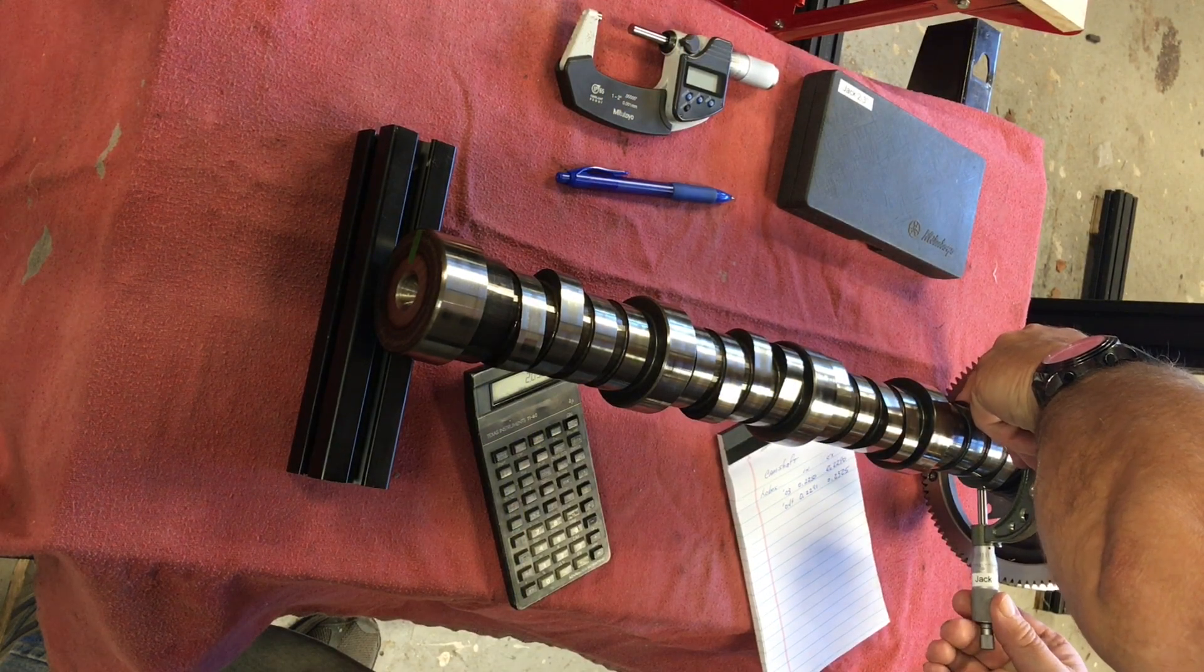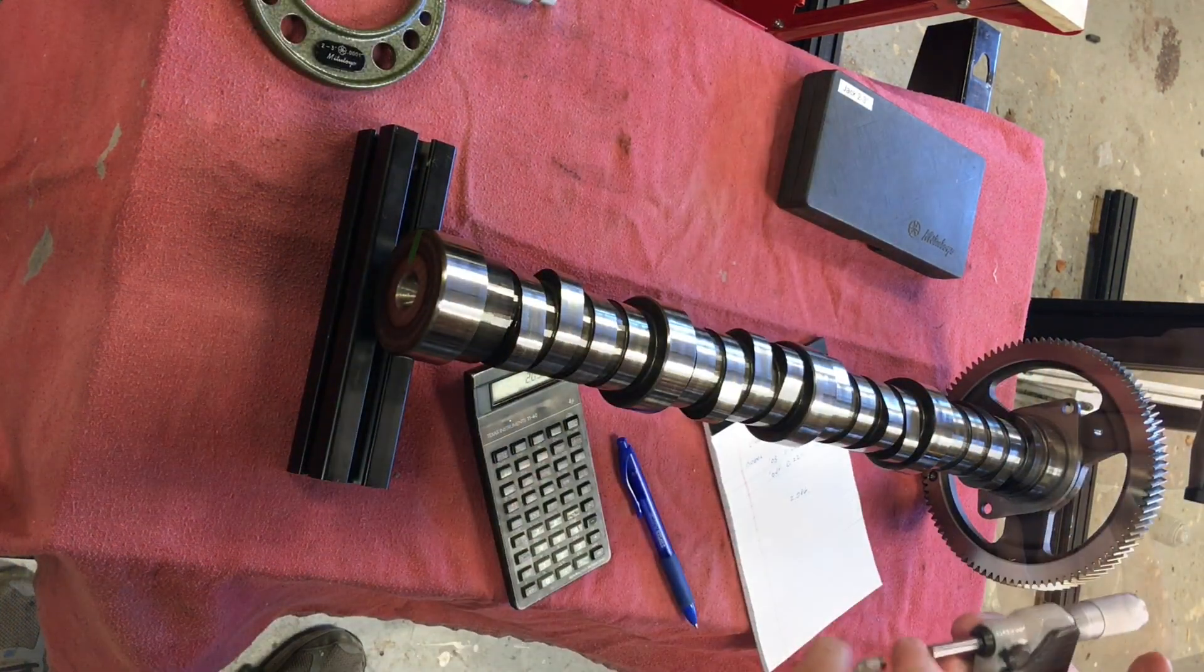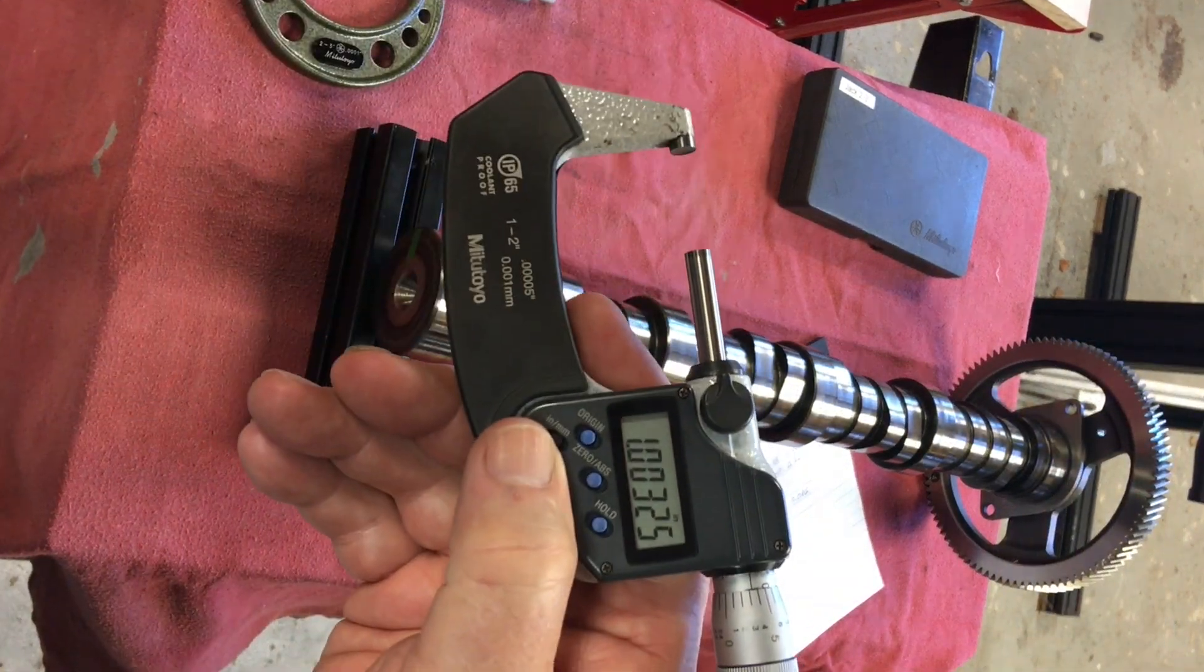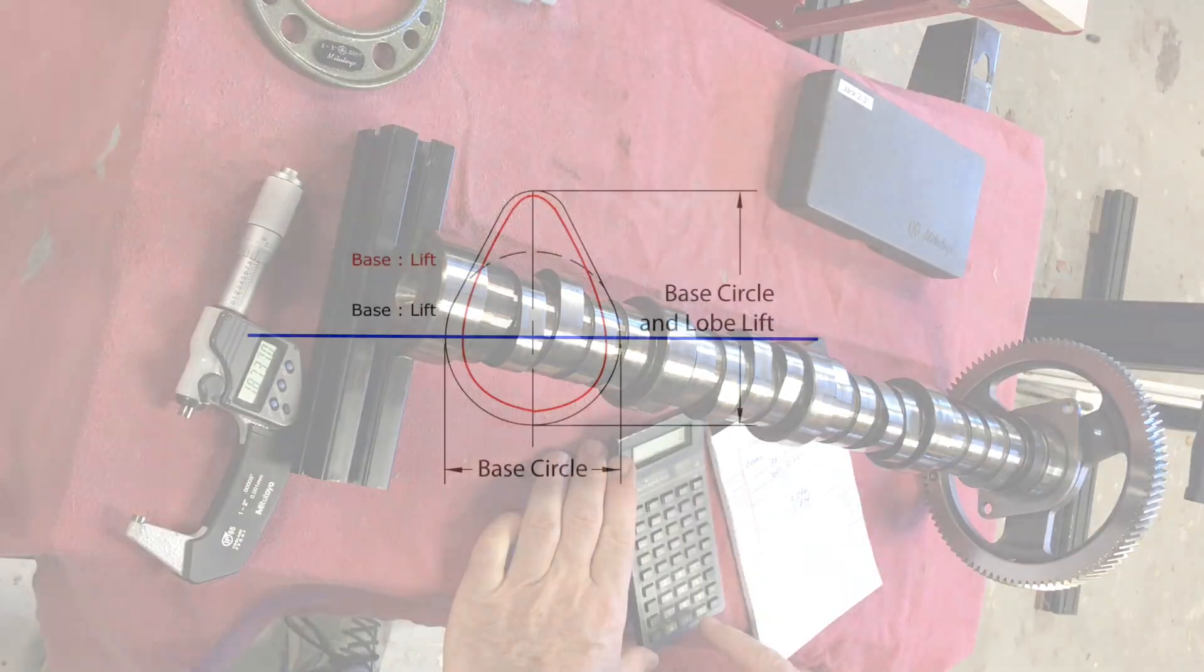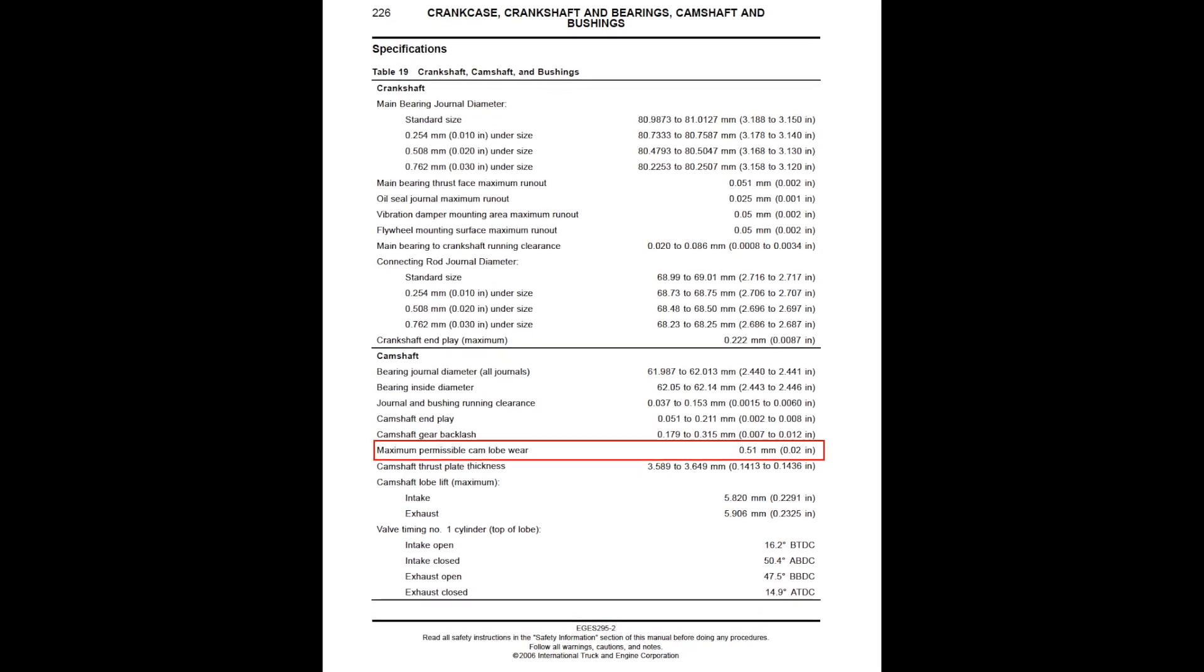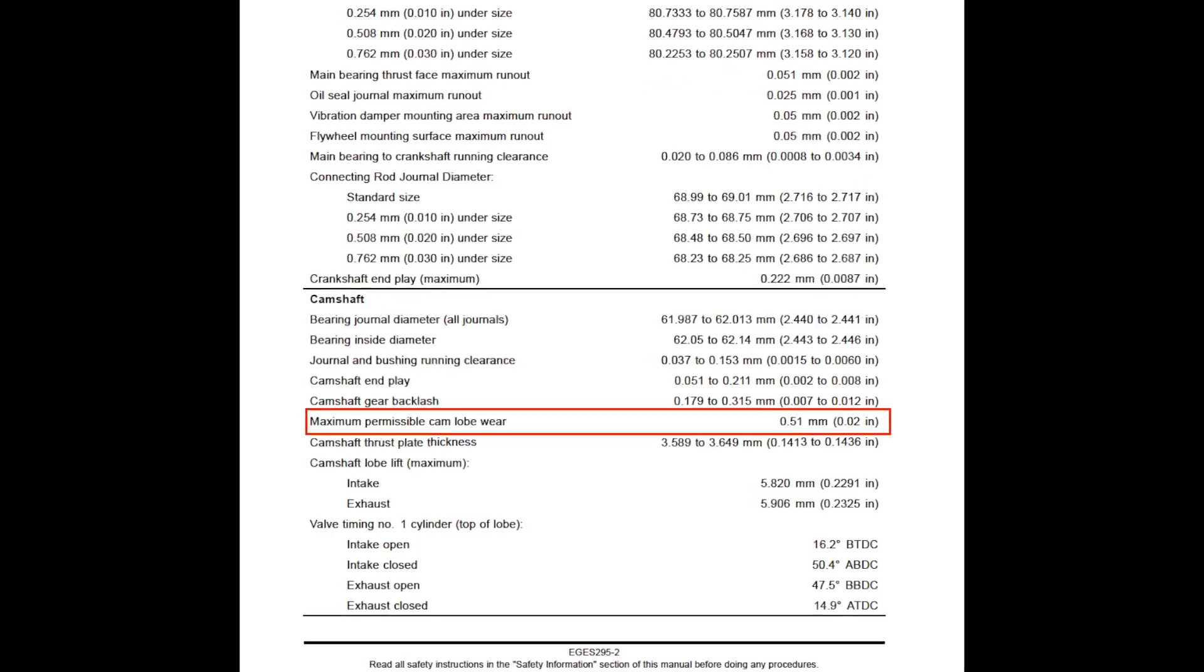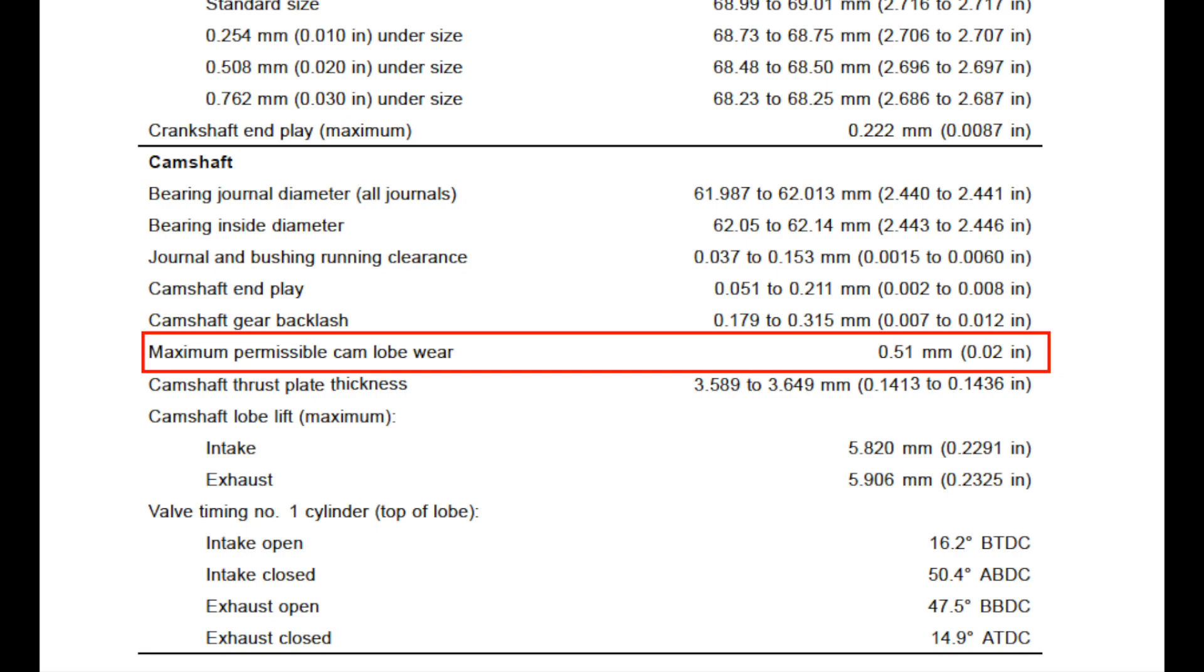This 2003 cam was not going to be reused, but I'll go through the normal steps. Well, in some cases, you could use micrometers to measure the base circle and lobe to determine lift. That is not always possible depending on where the ramp of the lobe starts. You don't always have that 180 degree capability. But you can use a micrometer to measure for total lift and lobe wear. The manual says you could have 20 thousandths lobe wear, which is a crazy amount of wear to have.